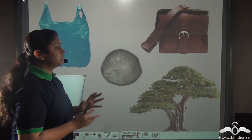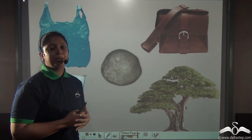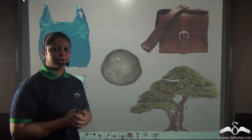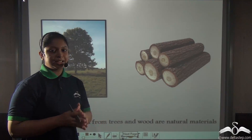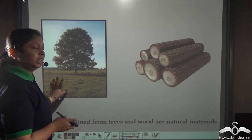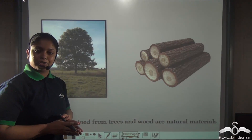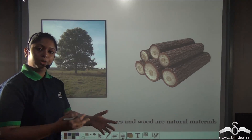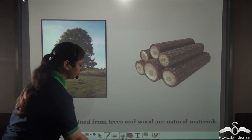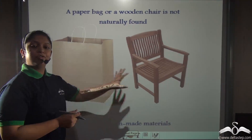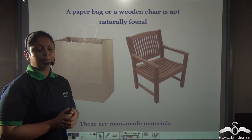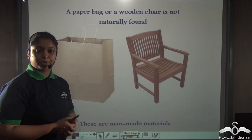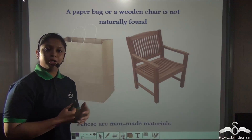We come across many materials in our day-to-day life. Some might be natural, some might be man-made. But how can we surely determine what is natural and what is man-made? Let's take this example: a tree or wooden logs — are these natural or man-made? Well, these are natural materials because a tree or a wooden log you can find in nature. But a paper bag or a wooden chair — these are made by humans by obtaining natural material like wood, so they are not naturally found.